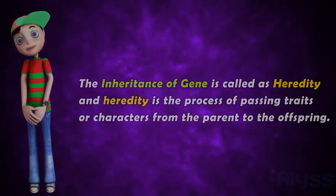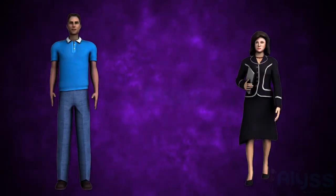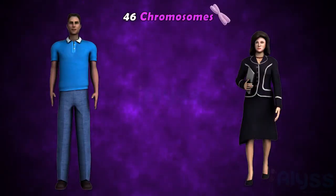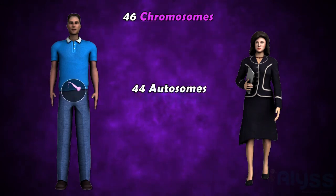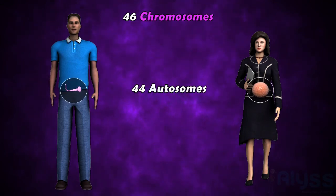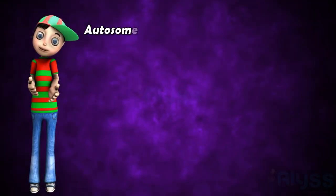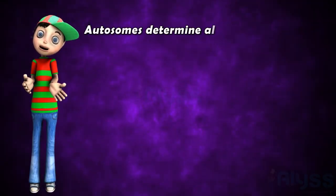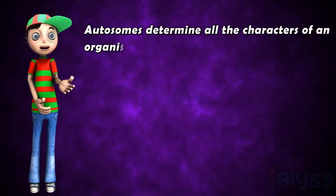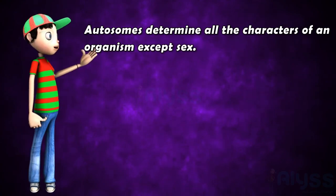For example, human beings have 46 chromosomes, out of which 44 are autosomes and 2 are sex chromosomes. Autosomes determine all the characters of an organism except sex.